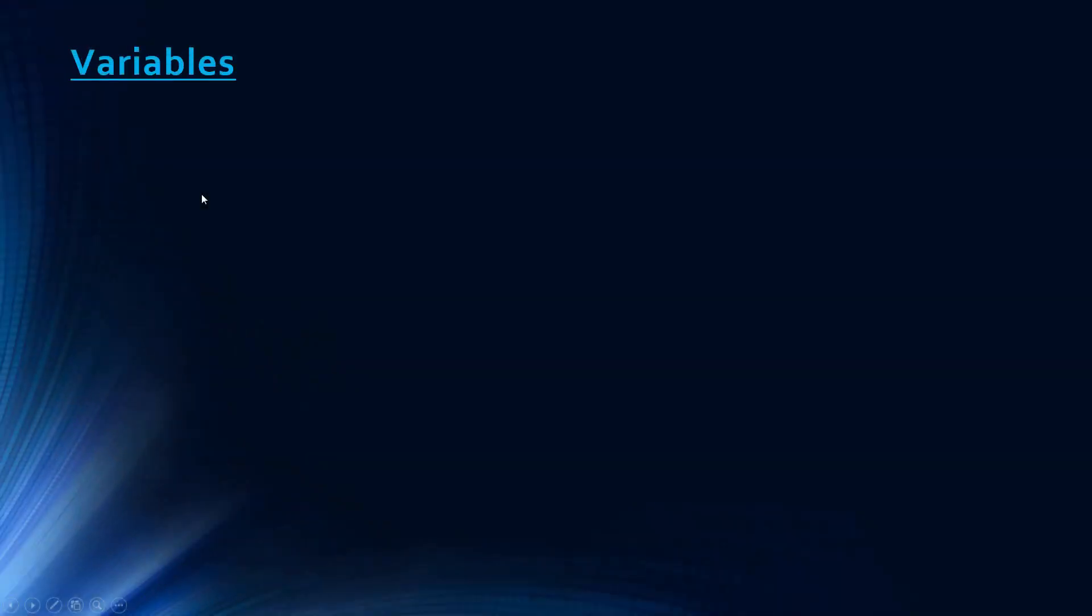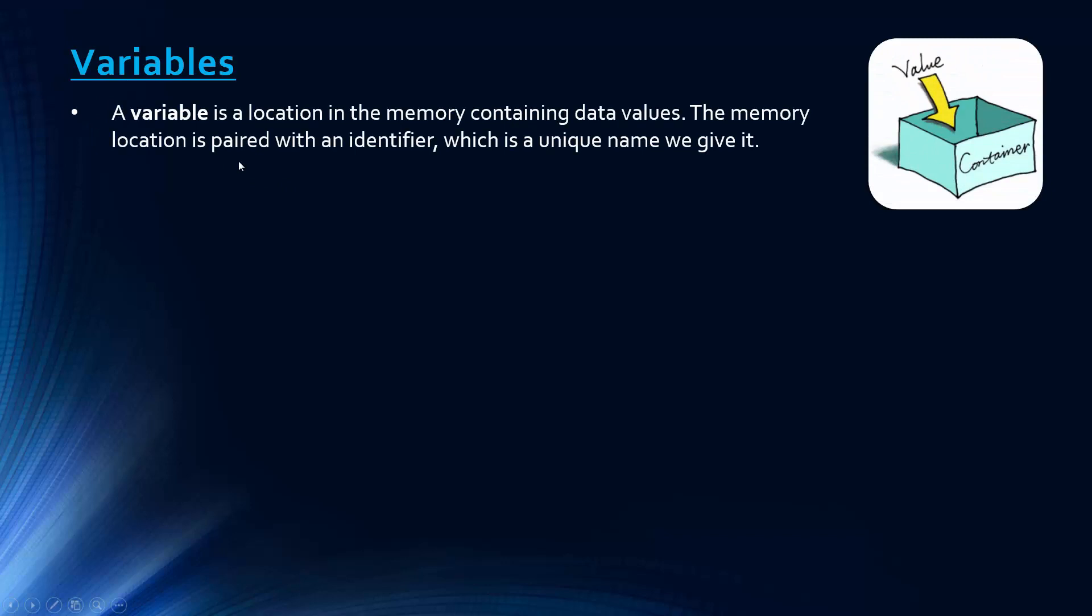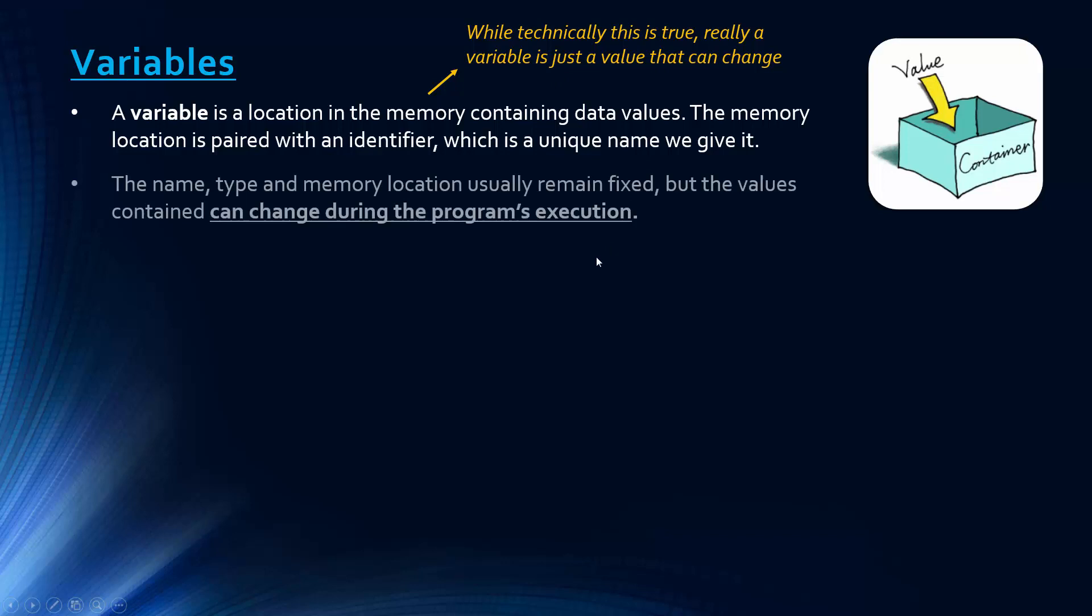If we now look at variables slightly more formally - a variable is a location in the memory containing data values. This memory location is paired with an identifier which is the unique name we give. The variable name is what's known as the identifier. This definition is taken more literally in languages like C++, but in others like Python, a variable is just a value that can change. That's probably a better way for you to think about it.